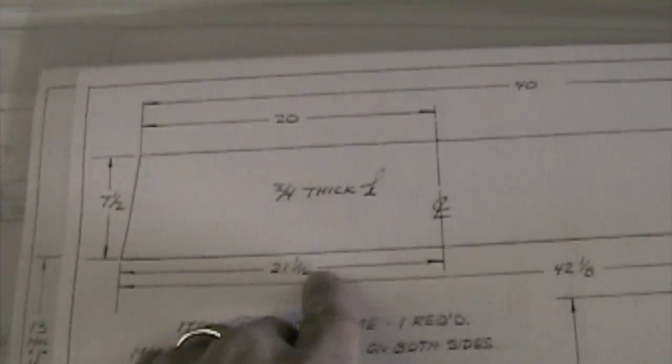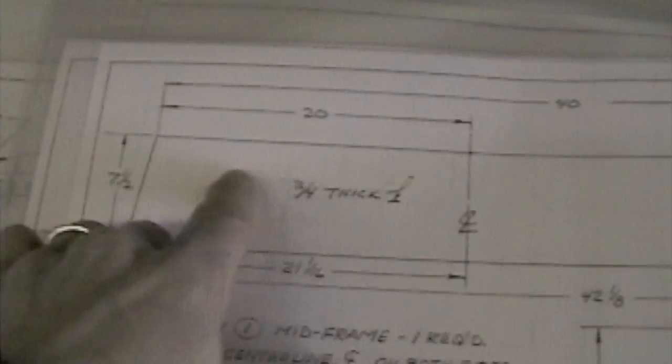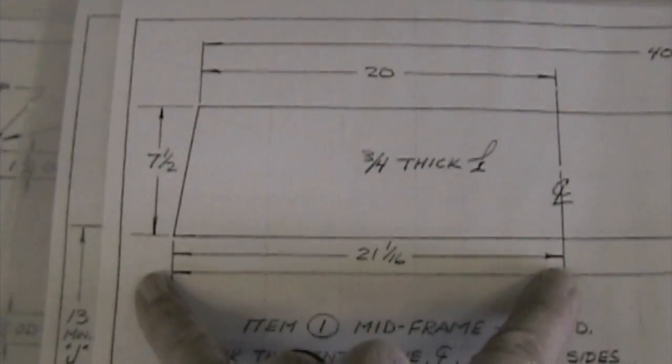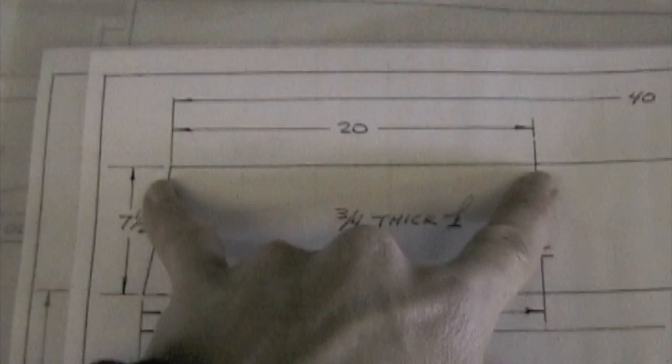Right now we're laying out the center bulkhead here with a slight angle for the center line. The bottom, 21 and a sixteenth. The bottom, 20.